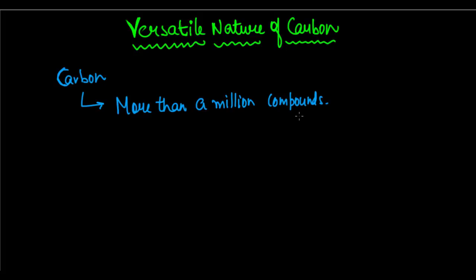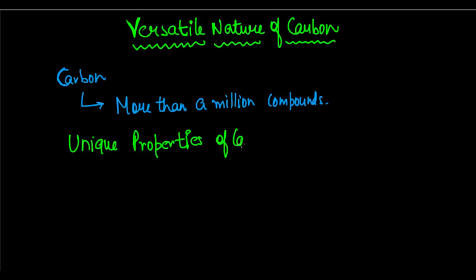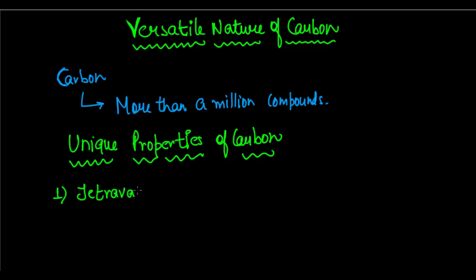But how is carbon able to form these compounds? Carbon has a unique nature because it has two very unique properties — two properties which are very rare. So what are the properties that enable carbon to form so many compounds? There are two main unique properties of carbon.